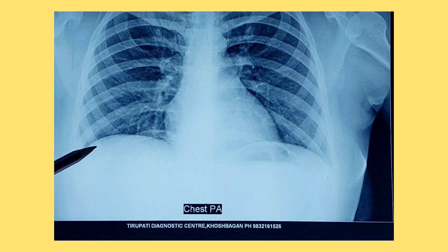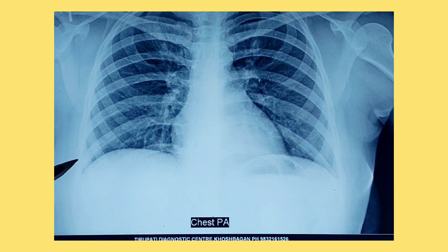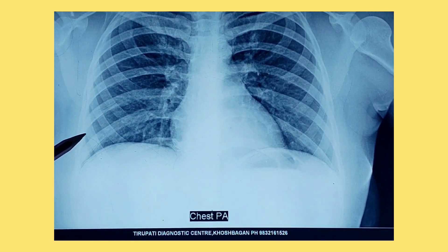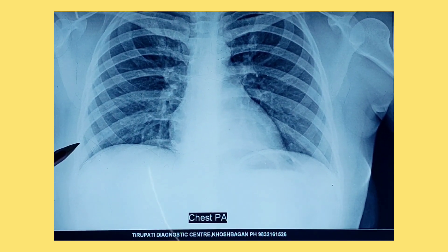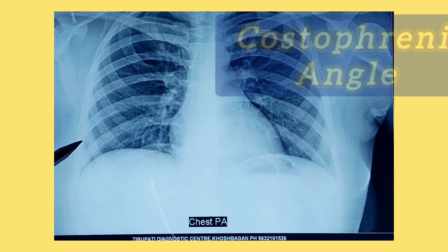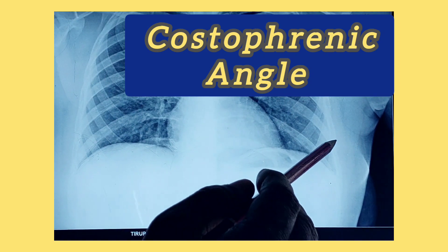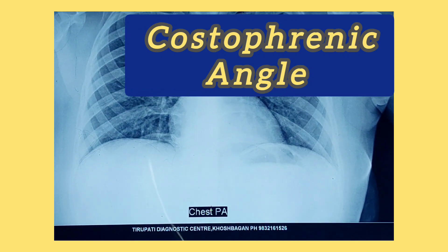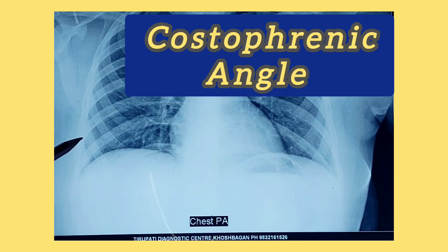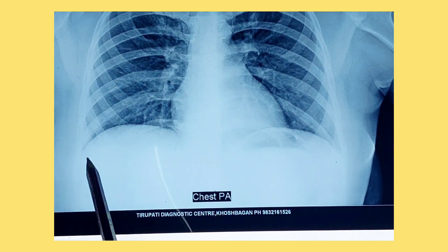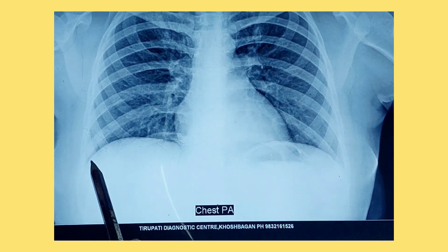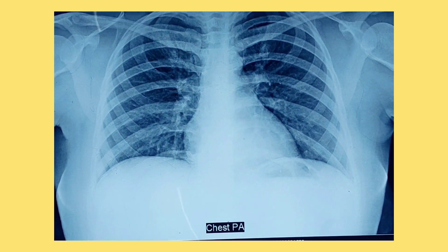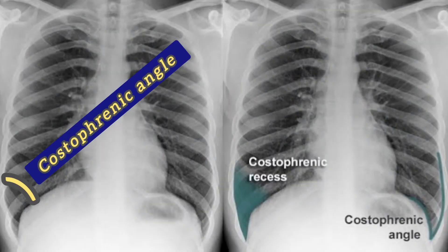Another angle is also present. This is the ribs and this is the diaphragm — so this is the costophrenic angle. The costophrenic angle on this side and the costophrenic angle on this side may be obliterated due to accumulation of fluid in the case of pleural effusion. This is the importance of the costophrenic angle.